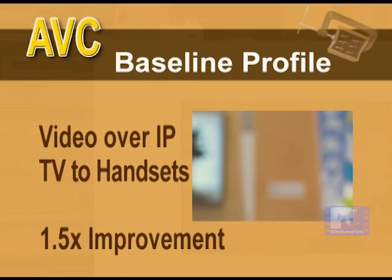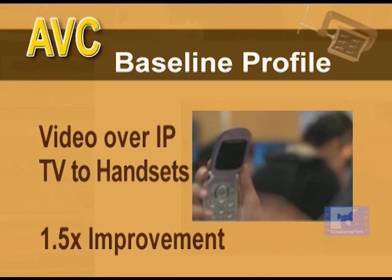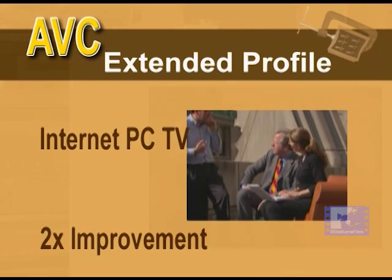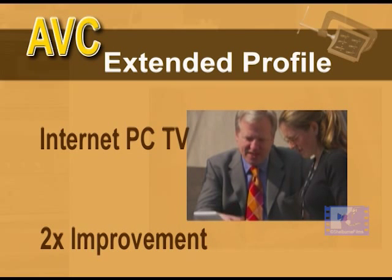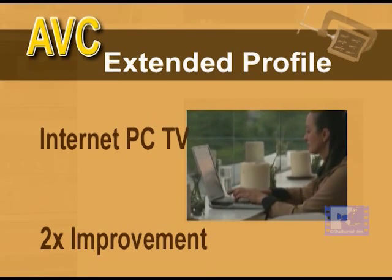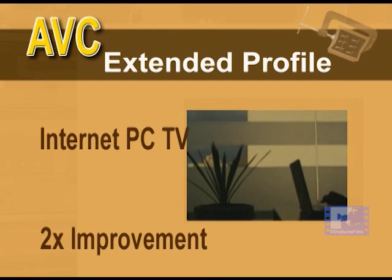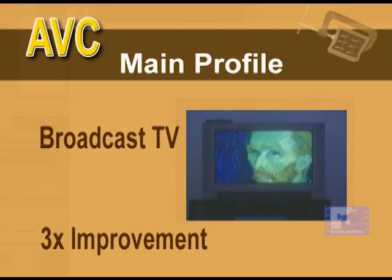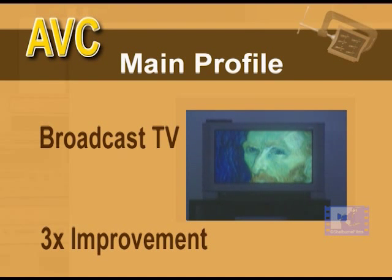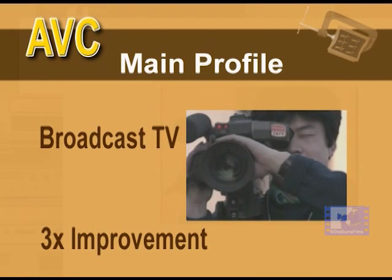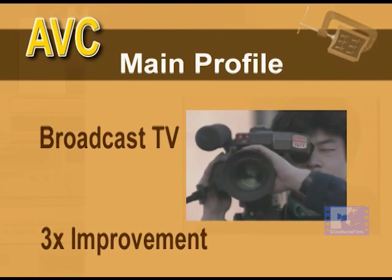The baseline profile achieves a 1.5 times improvement in compression over MPEG-2. The extended profile is suitable for use in internet-capable PCs and sophisticated handsets, achieving a 2 times improvement in compression efficiency over MPEG-2. The most complex of the three is the main profile, best suited for broadcasting applications since it includes interlaced video tools, achieving a 3 times improvement in compression efficiency over MPEG-2.